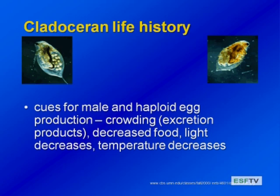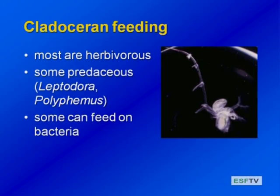Cues for production of males and haploid eggs include crowding — even excretory products from a culture can sometimes trigger it — as well as reduced food conditions, reduced light, and reduced temperature, mimicking fall or winter conditions. Most cladocerans are herbivores, but some like Leptodora, Polyphemus, Bythotrephes, and Cercopagus are predaceous. Some of these Cladocerans can also eat larger bacteria, making them important conduits from the microbial loop to the grazing food chain. Many of these are food for fish.